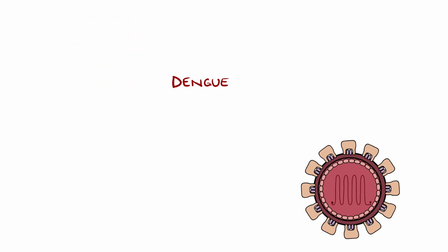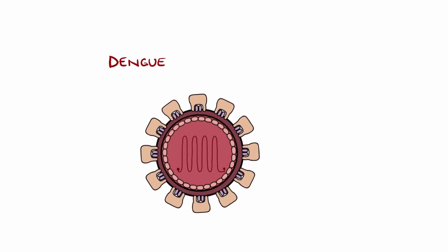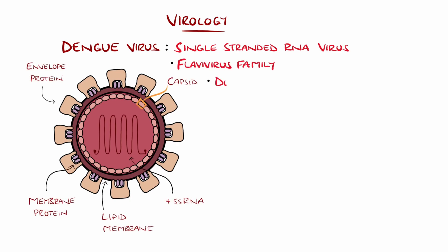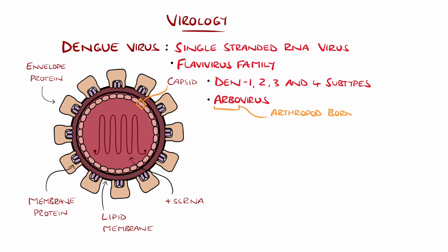Dengue is a single-stranded positive sense RNA virus of the flavivirus family with four subtypes, transmitted by Aedes mosquitos. This makes it an arbovirus — that is, an arthropod-borne virus — similarly to West Nile virus, yellow fever, Japanese encephalitis, and Zika virus.